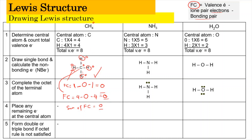Now we calculate formal charges for ammonia, NH3. For hydrogen, all three are identical, so we calculate once: valence electrons = 1, lone pairs surrounding hydrogen = 0, bonding pairs = 1, so the formal charge is zero. All three hydrogens carry a formal charge of zero.